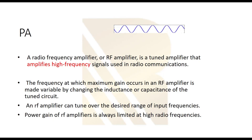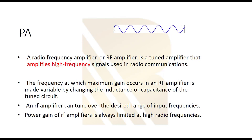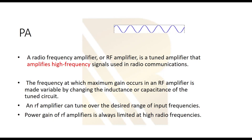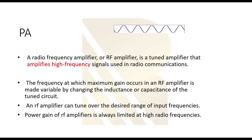The frequency at which maximum gain occurs in an RF amplifier is made variable by changing the inductance or capacitance of the tuned circuits. A power amplifier has active and passive components like transistors, inductors, and capacitors, so we can tune them to reach the desired output power and maximum gain. An RF amplifier can be tuned to a single frequency or to operate across a frequency band from f1 to f2.